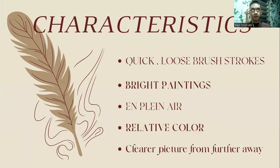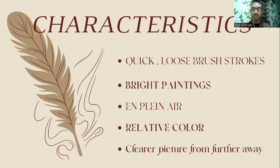Characteristics of Impressionism include: quick loose brushstrokes, bright paintings, en plein air, relative color, and clear picture from further away. The first characteristic is quick loose brushstrokes. This is probably the most commonly talked about and easily recognized of the Impressionism art characteristics. When you zoom in on an Impressionist piece, you can see the artist's hand with individual small and loose brushstrokes.